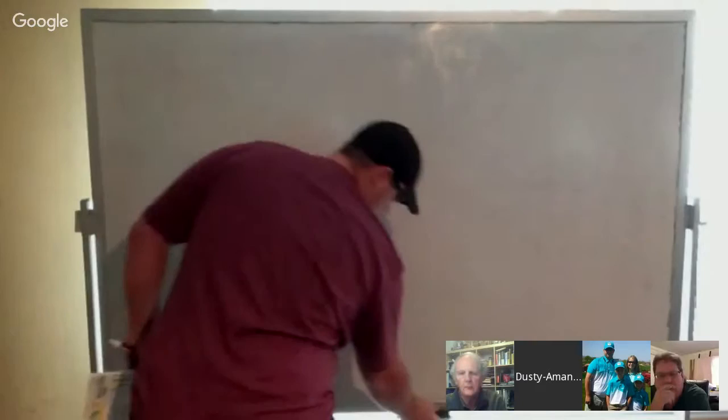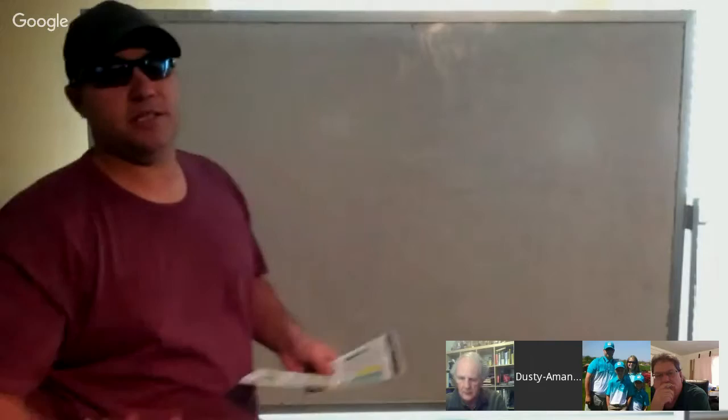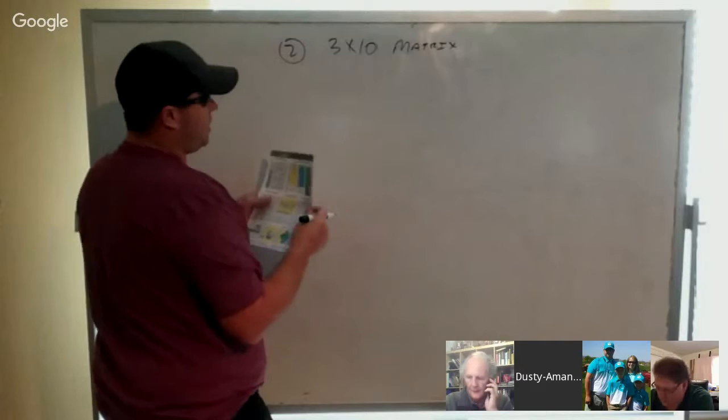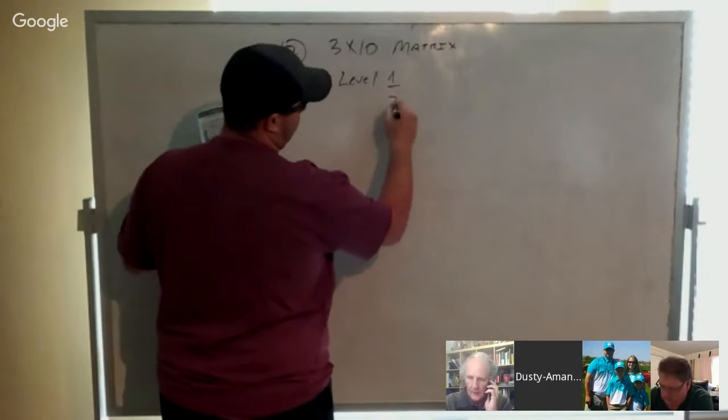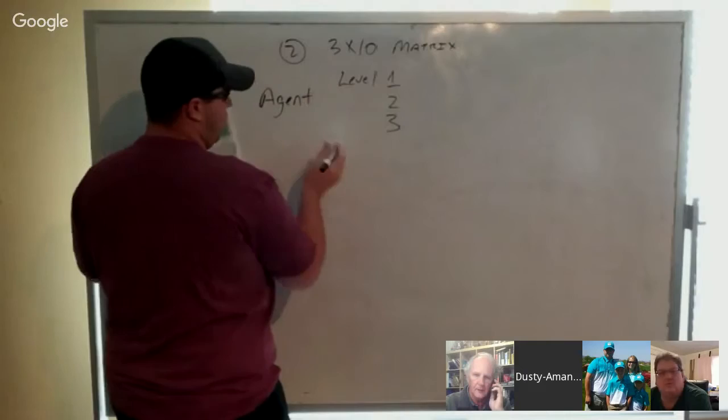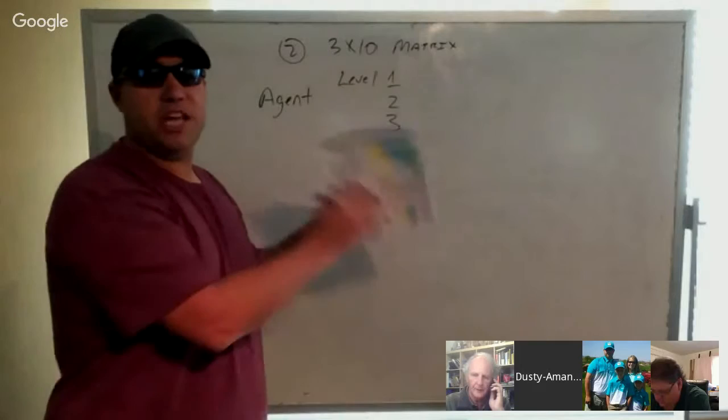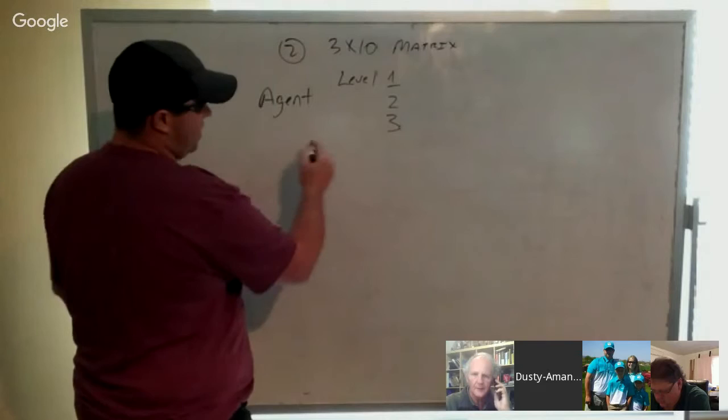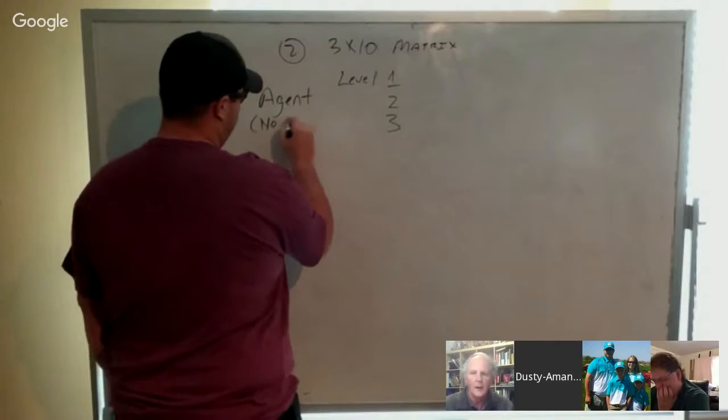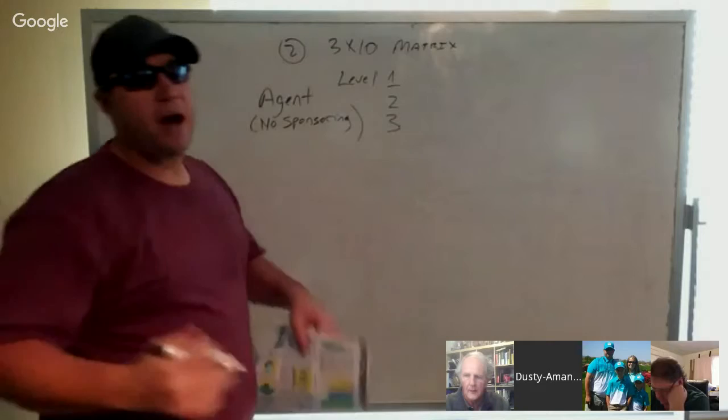Second part of our comp plan is probably the most unique because you don't really see a matrix that's designed quite like this. The three-by-ten matrix looks something like this. Once again, level one, two, and three, all you have to need is an agent. An agent defined is anyone that's recruited zero to two people. They qualify for the first three levels of the matrix. So why is that unique? Because there's no sponsoring required to earn any part of the first three levels of our matrix.